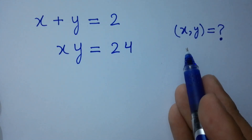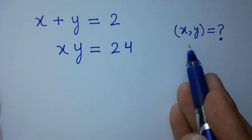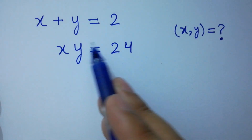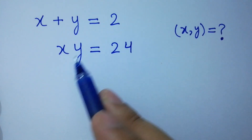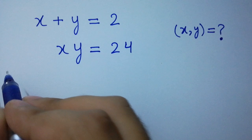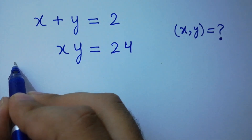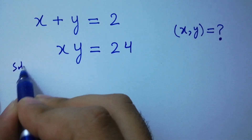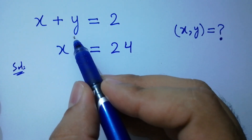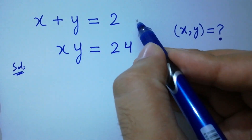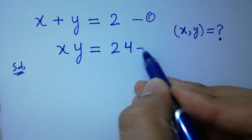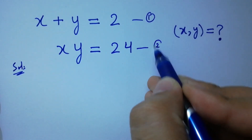Hello friends. Find the value of x and y if x plus y equals 2 and xy equals 24. Let's have a solution. Let's say x plus y equal to 2 is the first equation and xy equal to 24 is the second equation.